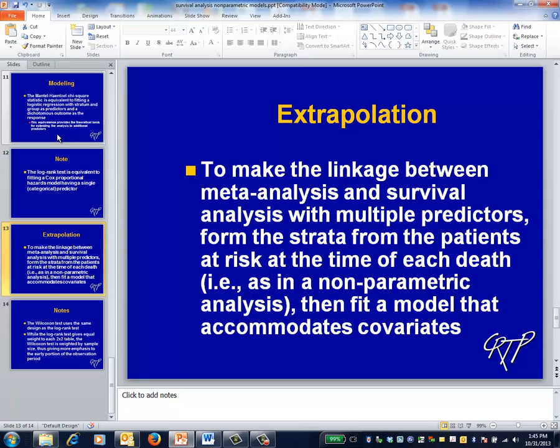Combining these two ideas, it turns out that fitting a Cox survival model with multiple predictors involves making risk sets at the time of each death. That's literally true. Next you fit logistic regressions, not with a single predictor as was the case for a log-rank test, but instead with as many predictors as you want. Also literally true.